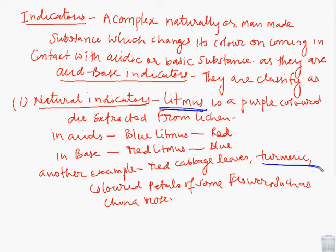Another natural indicator we use is turmeric. Sometimes we are eating in parties and dal or curry falls on the cloth, it becomes yellowish. This yellowish is due to the turmeric. When you apply the soap and clean it, it turns to pinkish and vanishes. So turmeric is an indicator. Colored petals of flowers like china rose are also natural indicators we use in laboratories.